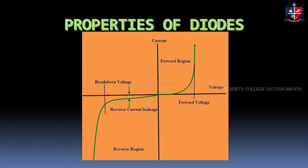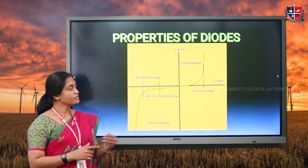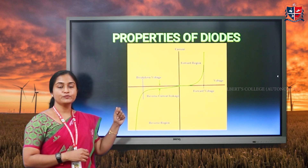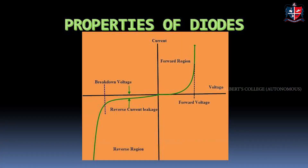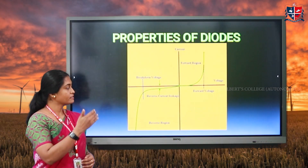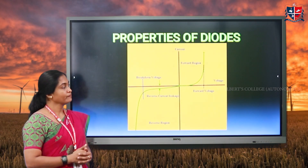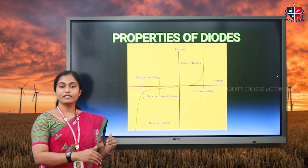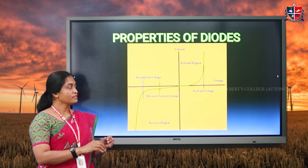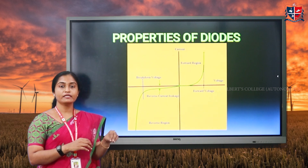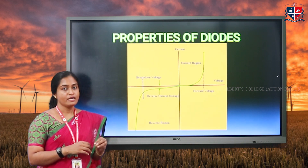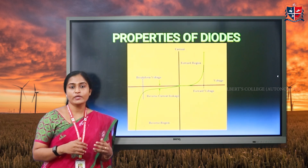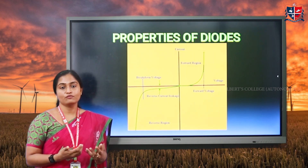This is the characteristic curve in forward and reverse bias. In this plot, along the positive x-axis we plot the forward voltage, and in the positive y-axis it is the forward current. In the negative x-axis, reverse voltage is plotted, and in the negative y-axis, reverse current is plotted. As we increase the forward voltage, the forward current also increases. At a particular value of the forward voltage, the forward current increases suddenly and sharply. That particular forward voltage is known as the break-in voltage or knee voltage. It is approximately 0.6 to 0.67 volts for silicon.